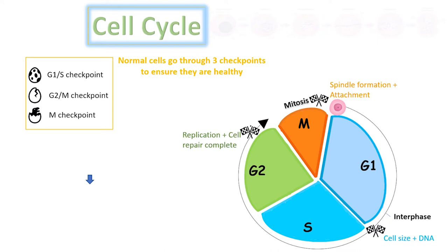The cell cycle has three checkpoints to ensure each cell is healthy prior to division. The G1, S, and G2 phases are all a part of the interphase cycle, while M indicates mitosis.